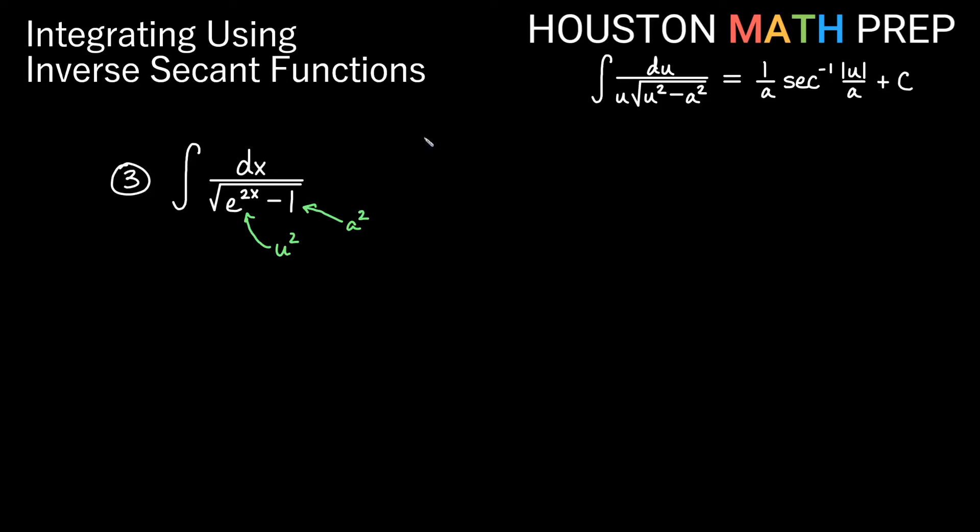So if we just sort of start treating this as our u squared, and we start treating this as our a squared, so then we'll be thinking about if a squared is 1, a is 1, and if u squared is e to the 2x, then u is actually e to the x. Because e to the x times itself gives us e to the 2x. So this is actually e to the x squared over here.